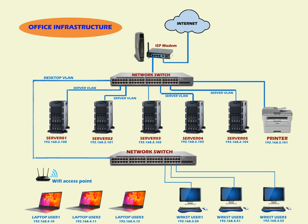Regarding office infrastructure, first we need an internet connection. An internet service provider — like BSNL or Tata Reallines — will provide a static IP address. The ISP provider will supply a modem, such as an ADSL router, and once the internet is provided, we connect the cable to the network switch.